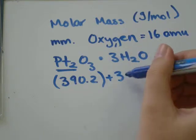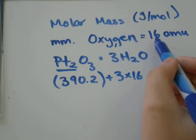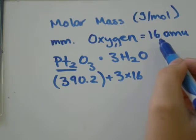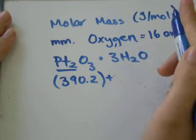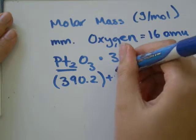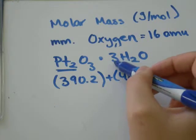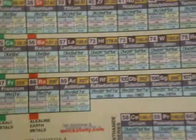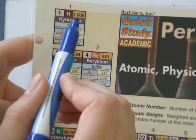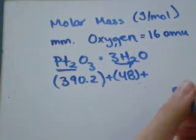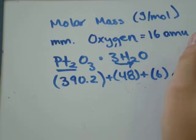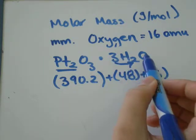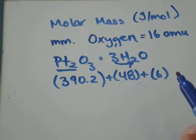plus 3 oxygen. Oxygen with 16, so 3 of them would have 48 amu plus 3 times 2 would be 6. We have 6 hydrogen. Hydrogen has a weight of 1. So, 6 times 1 would just be 6. And we have 3 oxygen. That would be 3 times 16, again, which would be another 48.